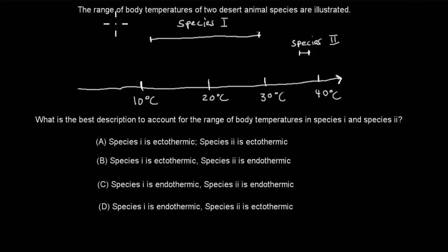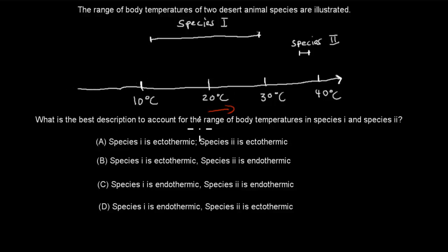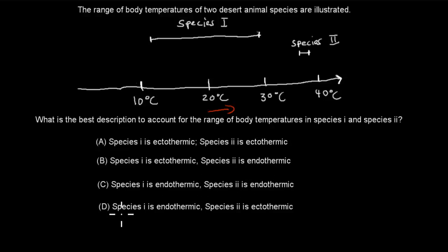The next question: A range of body temperatures of two desert animal species are illustrated, with temperature increasing from 0 to 40°C. What is the best description to account for the range of body temperatures in species one and species two? A. Species one is ectothermic, species two is ectothermic. B. Species one is ectothermic, species two is endothermic. C. Species one is endothermic, species two is endothermic. D. Species one is endothermic, species two is ectothermic. Pause the video and attempt the question.